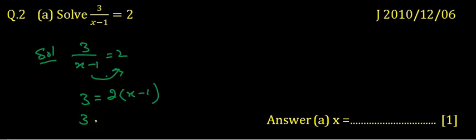For that it can be written as 3 equals, now we have to open the bracket by multiplying 2 with all the terms inside the bracket. So 2 multiplied by x becomes 2x, and minus 2.